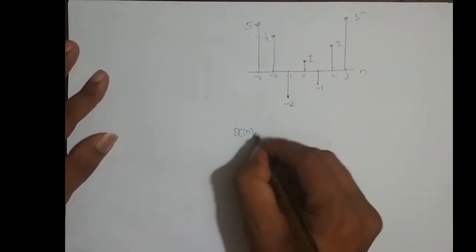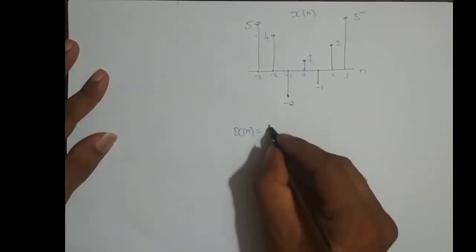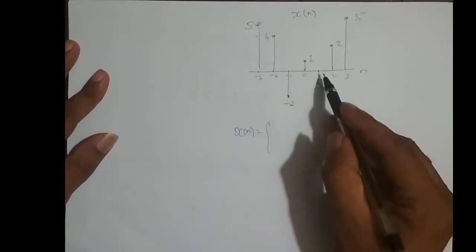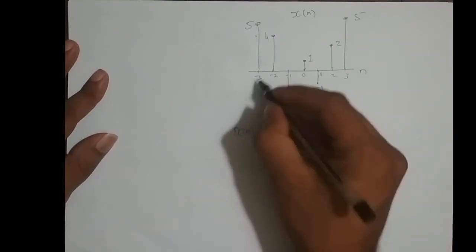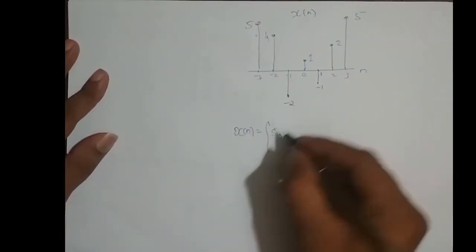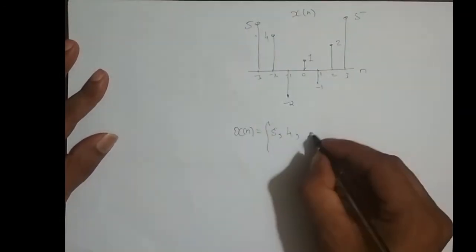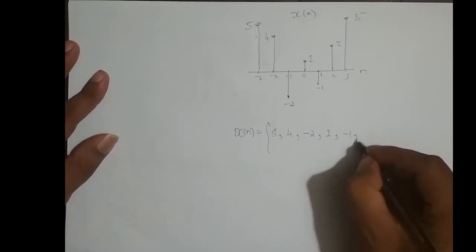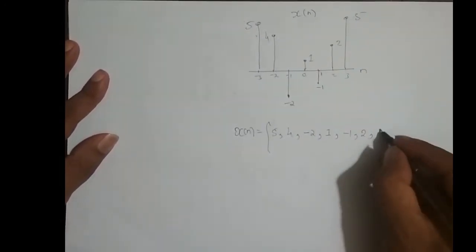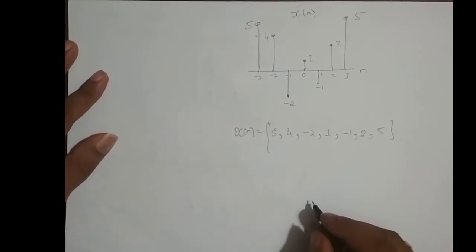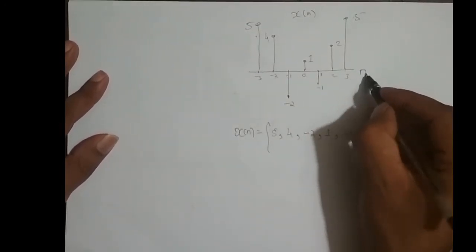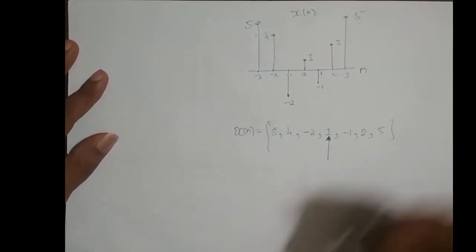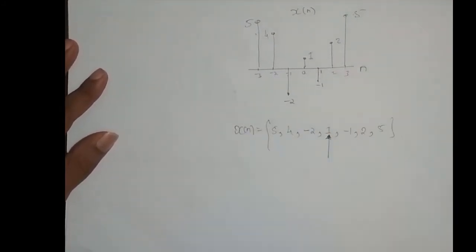How do I write this in sequence notation? This is x(-3), x(-2), x(-1), x(0), x(1), x(2), x(3). The value of x(-3) is 5, x(-2) is 4, x(-1) is minus 2, x(0) is 1, x(1) is minus 1, x(2) is 2, x(3) is 5. Where should I put the arrow mark? The arrow mark is the sample at n equal to 0, which is 1 — so the arrow mark goes at 1. Both representations of the sequence are the same.